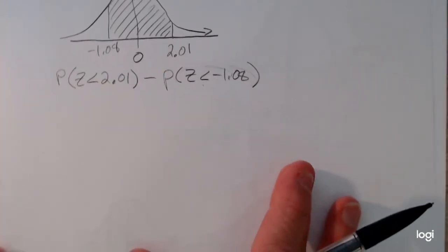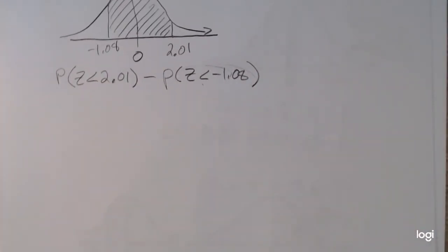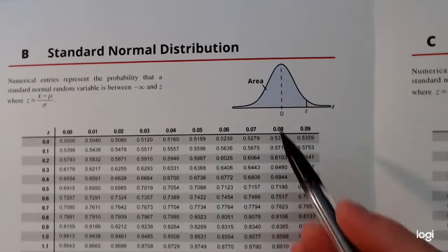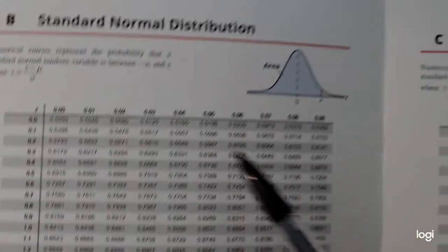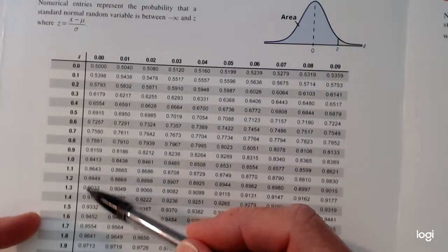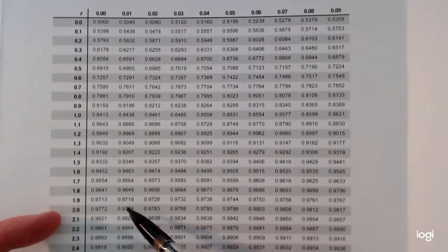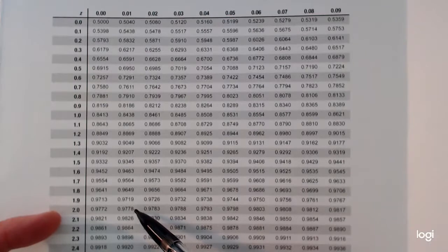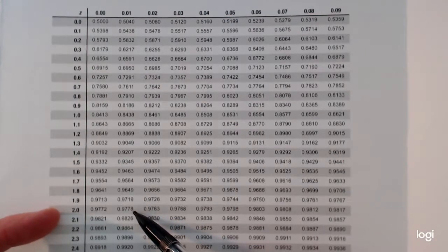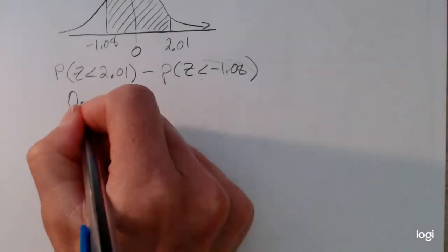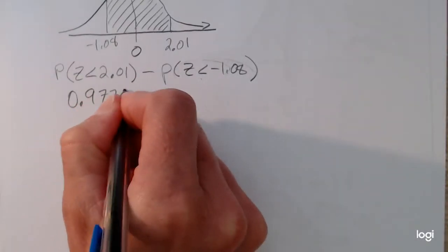So going to my standard normal table, I first want to go to the page that reads for a positive z-score. And I want to go down to 2.0 and over to 0.01, where that row and that column intersect is 0.9778. So that's that first piece, 0.9778.